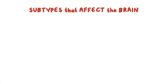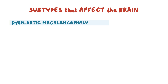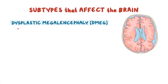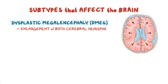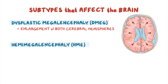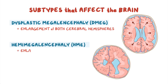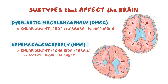Conditions include dysplastic megalencephaly, known as DMEG, which causes enlargement of both cerebral hemispheres. Hemimegalencephaly, or HME, causes enlargement of one side of the brain, which results in asymmetrical enlargement and can lead to severe seizures.